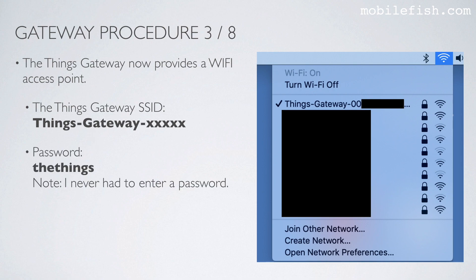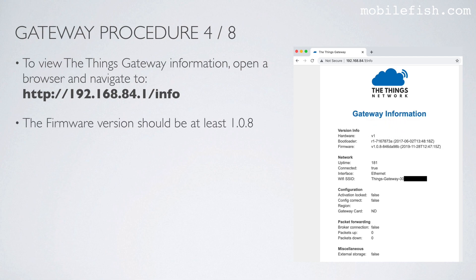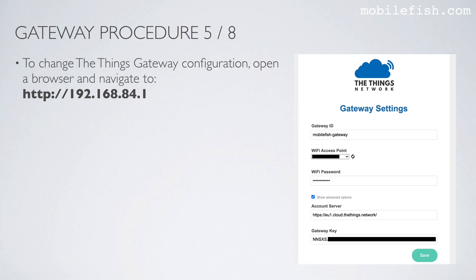The password is 'The Things'. On your computer, connect to this Wi-Fi access point. To view the Things Gateway information, open a browser and navigate to the listed address, and you will see your gateway information. The firmware version should be at least 1.0.8. To change the Things Gateway configuration, open a browser and navigate to the configuration address.